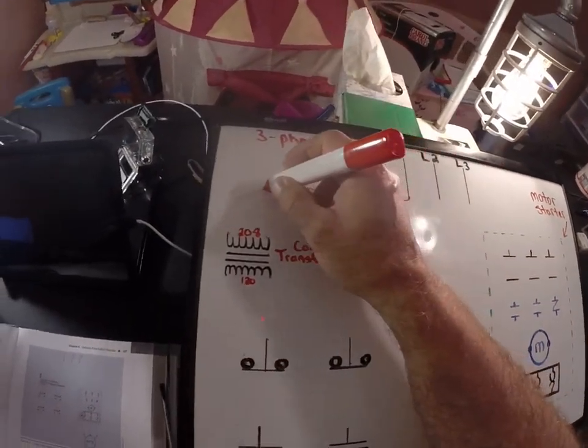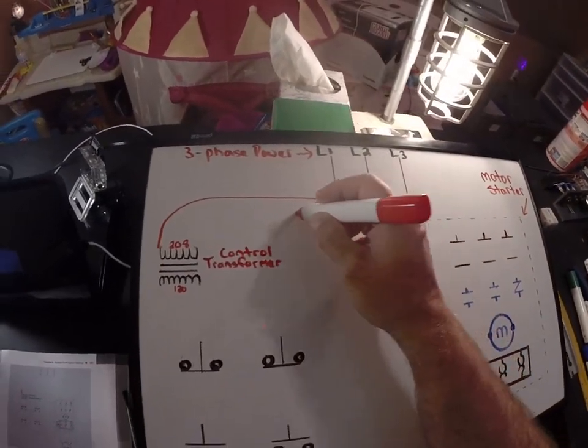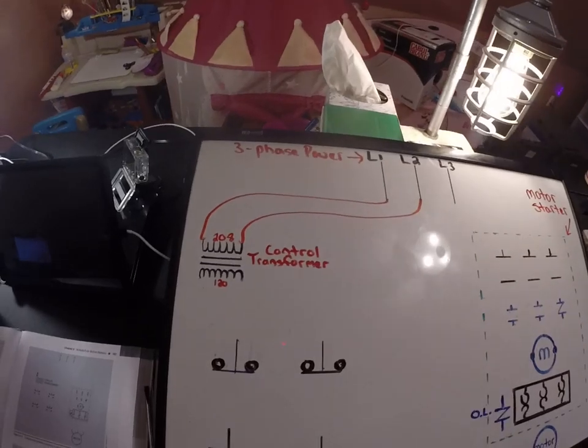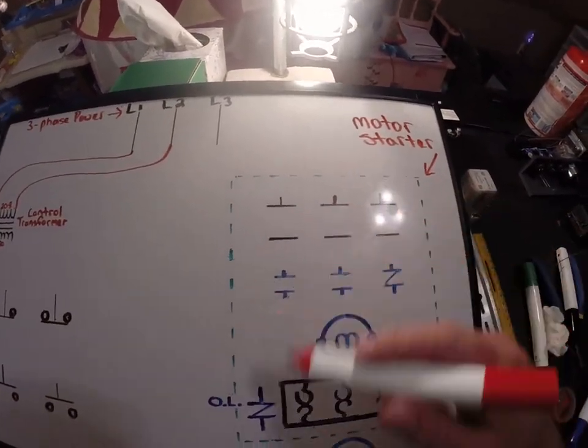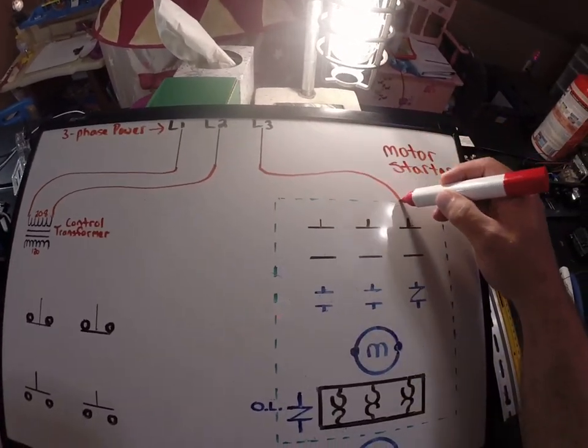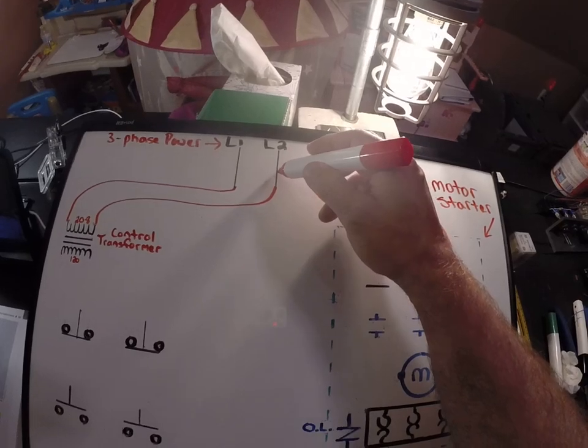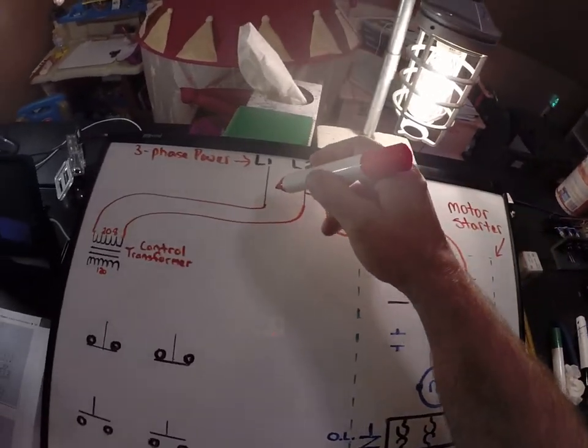And we're going to feed the transformer, so we're going to tap two legs. Now that's fed. And we're going to come over here, this is the contactor for the motor starter. This needs three phase power and we'll do the same thing here. That's fed three phase in.